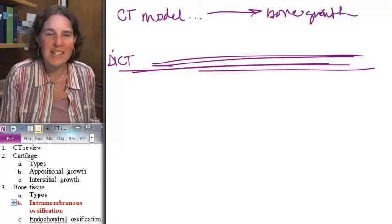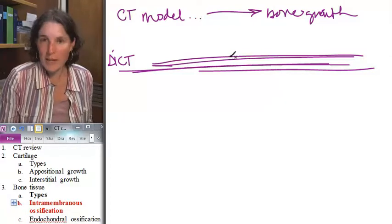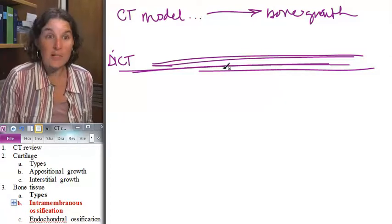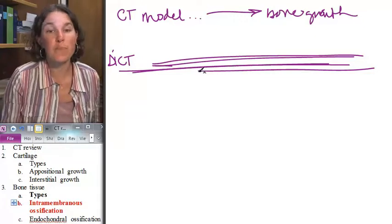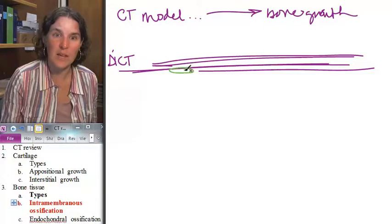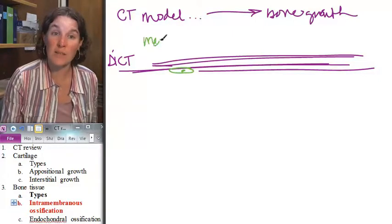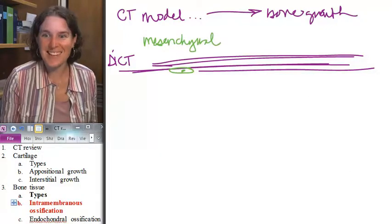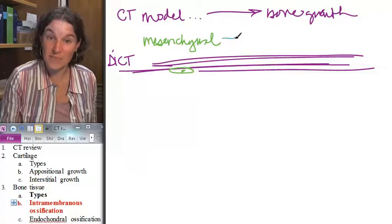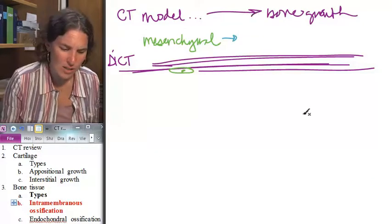Now, does the dense irregular connective tissue remind you of anything? It reminds me of the periosteum or the perichondrium. And in fact, you have little cells in here. Guess what they are? They start out as mesenchymal cells, and then they differentiate into cells called osteoprogenitor cells.